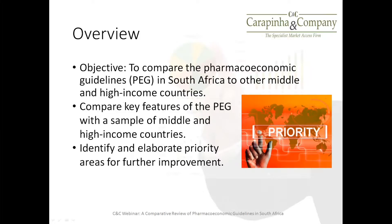The overall purpose of the research, which started a couple of months ago, was to compare South Africa's guidelines to those of other middle and high-income countries. It started as a passing interest because CNC was already doing a substantial amount of work amongst clients in South Africa, and so we familiarized ourselves with the pharmacoeconomic guidelines. CNC was then requested to do some work in Portugal, so we looked at their pharmacoeconomic guidelines and compared the two, and found that there were differences.